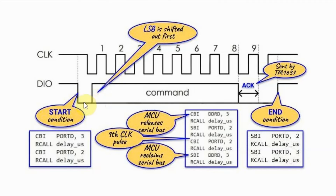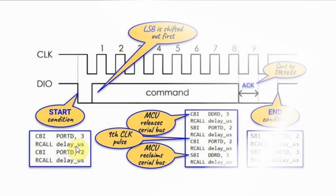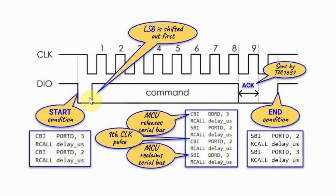The start condition is achieved by pulling the data line low while the clock is high, and then pulling the clock low. The assembly code shown here pulls the data line low, applies a short delay in microseconds, then pulls the clock line low, and applies another delay in microseconds.